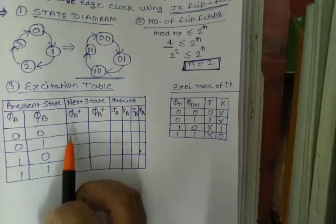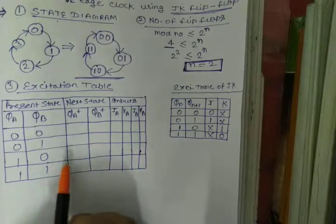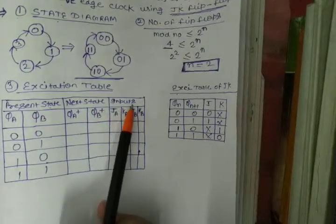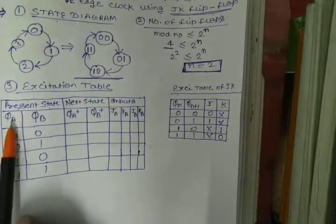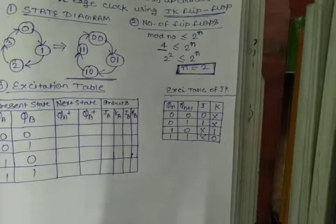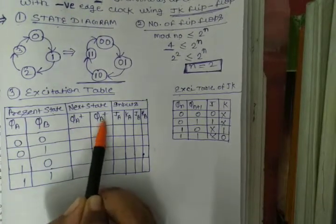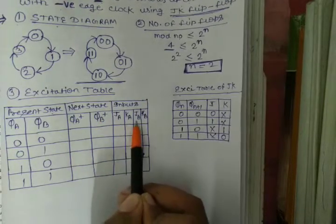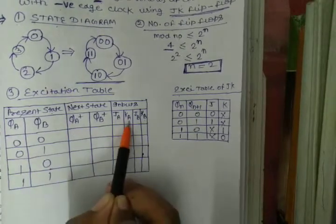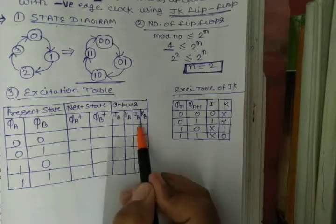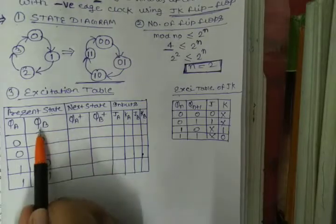The excitation table for JK flip-flop shows: for 0→0, J=0 K=X; for 0→1, J=1 K=X; for 1→0, J=X K=1; for 1→1, J=X K=0. Cross represents don't care — an invalid state. Now see the main excitation table construction. With 2 flip-flops, we have present states QA, QB and next states QA+, QB+, with inputs JA, KA, JB, KB.